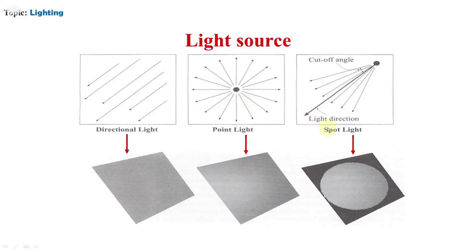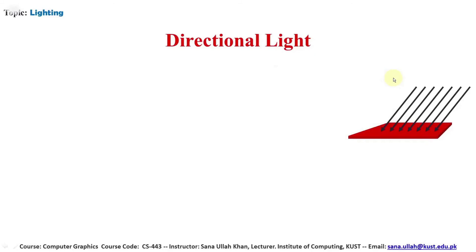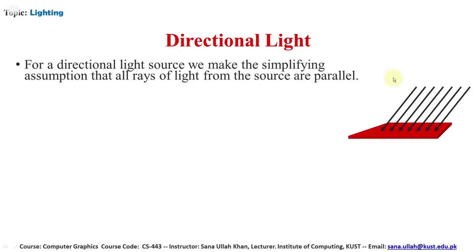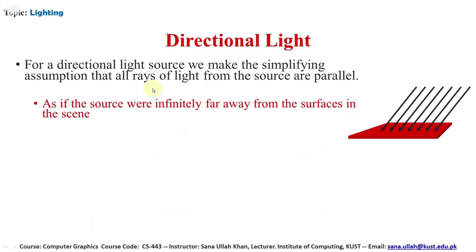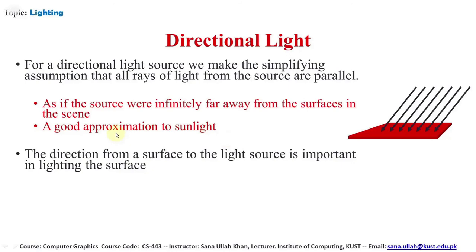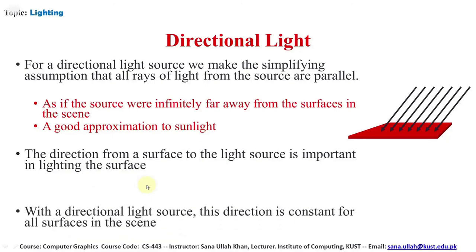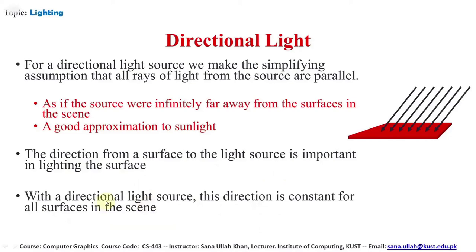Directional light: a directional light source makes the simplifying assumption that all rays of light from the source are parallel and travel in the same direction — as if the source is infinitely far away from the surface, like sunlight. The direction from a surface to the light source is important in lighting the surface. With a directional light source, this direction is constant for all surfaces in the scene.